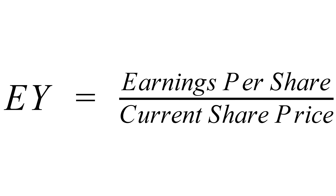So today we'll be talking about earnings yield. Earnings yield is the exact reciprocal of the price to earnings ratio. If you haven't checked that video out, make sure to do so — I'll link it in the cards above or in the comments below. Since earnings yield is the exact reciprocal, it's sometimes referred to as the EP ratio. The way to calculate it is to divide earnings per share by the current stock price.